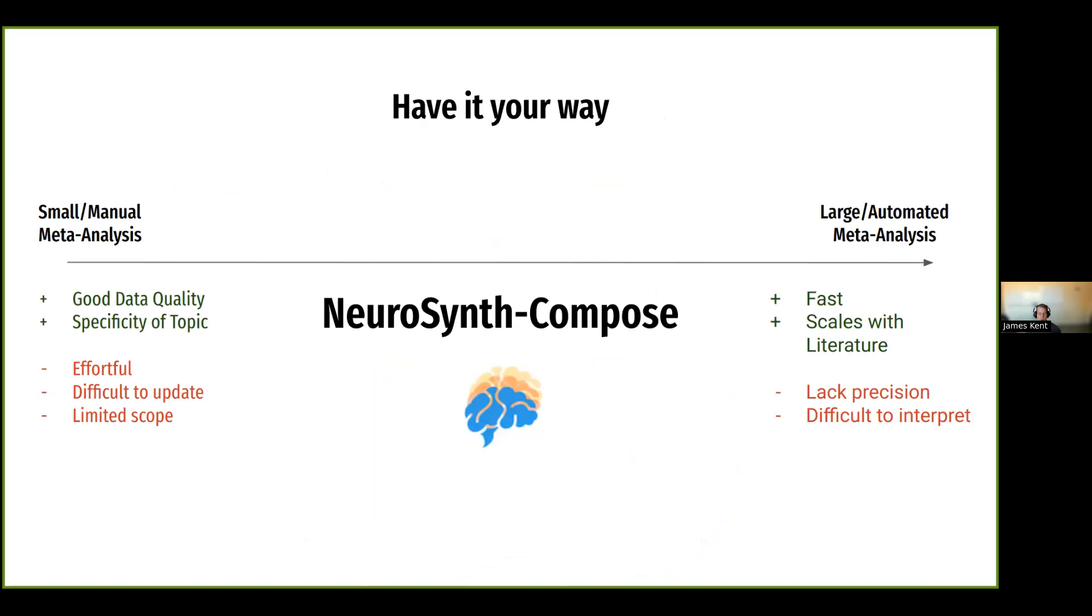Where we sit Neurosynth Compose is between the continuum of small manual meta-analyses and large automated meta-analyses. So in previous lectures, we've talked about both the pluses and minuses of each of these types of meta-analyses. And just to briefly recap, when we have small manual meta-analyses, we can say that they are going to be of good data quality, since you have researchers that are manually validating the coordinate extraction, as well as which coordinates to actually include, which allows you to get to very specific topics of interest. The downsides are that these meta-analyses are effortful, are difficult to update, and limited in scope. You can't cover all the topics of cognitive neuroscience by doing manual meta-analyses. There's just too much literature out there.